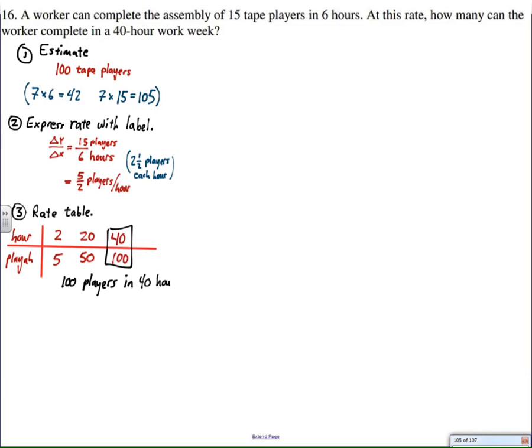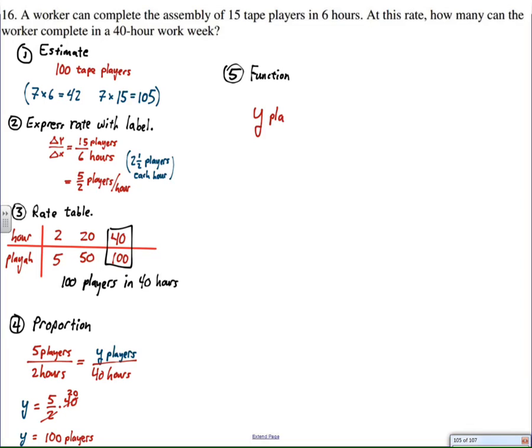Now, as a proportion, the proportion says 5 players is to 2 hours, as y players is to 40 hours. Cross-multiply, solve, and get 100 players. Once again, confirmed. As a function, y players is 5 halves players per hour times x hours. Once again, notice, this is players, this is players per hour, this is hours. If we multiply, the hours cancel, and I get 5 halves x players. So, y players is equal to 5 halves times x. Now, x equals 40 hours, so we put 40 hours in for x, and sure enough, y equals 100 players.